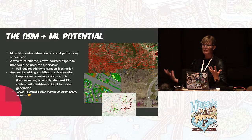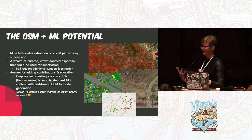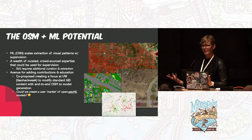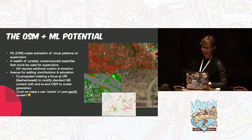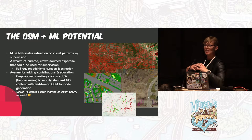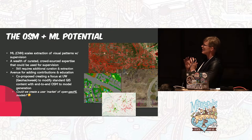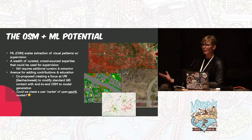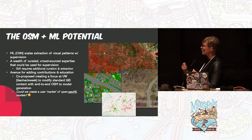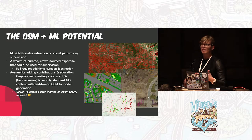I'm going to be using machine learning, or ML, as an acronym. But really I'm talking about convolutional neural networks that are excellent at scaling visual pattern extraction — things we've seen with building footprints and transportation networks. The key is the supervision of these models with examples to create a robust training data set and extract the features we're interested in, which can largely be leveraged from the OpenStreetMap community.